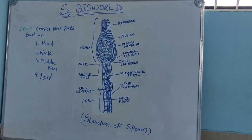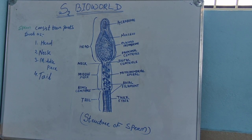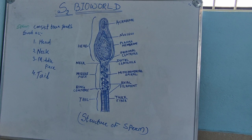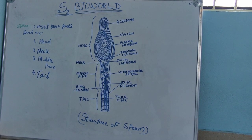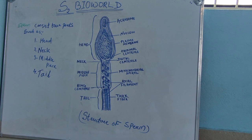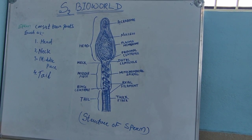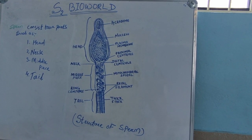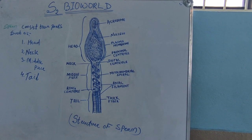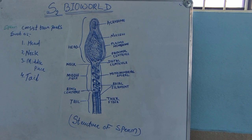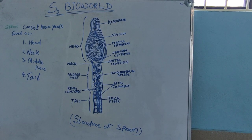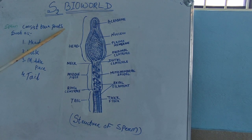Welcome to S2 Bio World YouTube channel. Today the topic is the structure of sperm. Sperm is a haploid male gamete and was first discovered by Leeuwenhoek in the year 1677 in humans. Human sperm is a microscopic structure which consists of a tadpole-like shape.